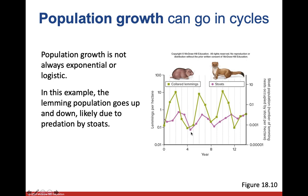Once there aren't enough stoats to outpace lemming reproduction, lemmings start to reproduce again, their population increases, and the environment can now support more stoats. As the lemming population increases, the stoat population increases with it — until there are too many stoats again and they're killing lemmings faster than they can reproduce, and the whole cycle crashes down again. This is how the vast majority of animals work — populations of predators and prey go in these big up-and-down cycles dependent on their predator-prey relationship.